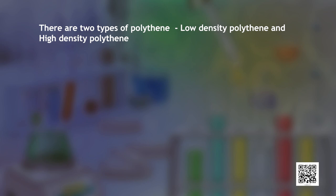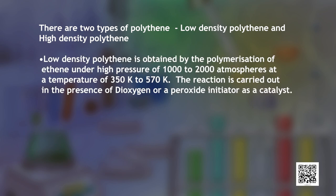There are two types of polythene: low density polythene and high density polythene. Low density polythene is obtained by the polymerization of ethene under high pressure of 1000 to 2000 atmospheres at a temperature of 330 to 570 Kelvin.